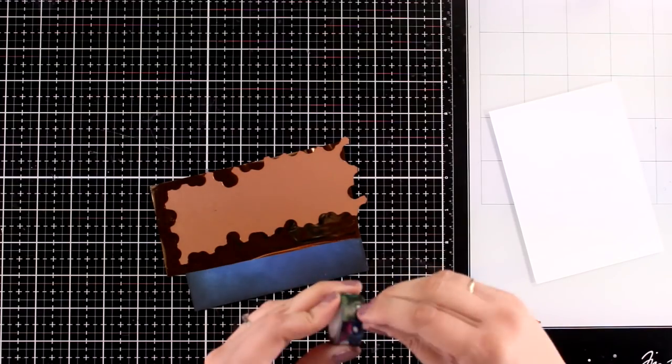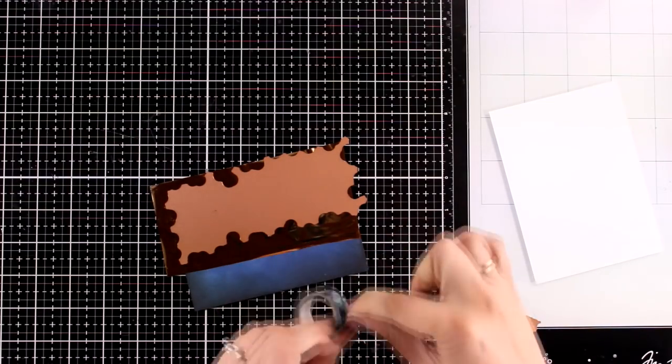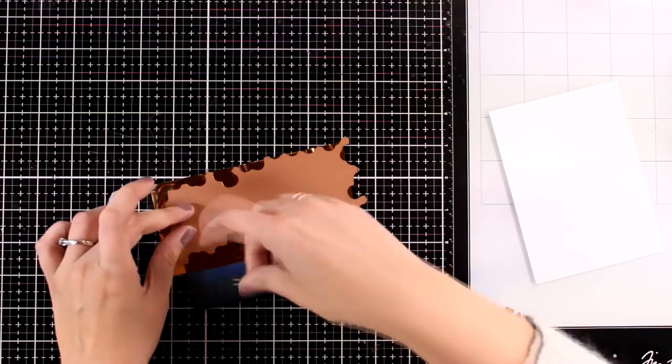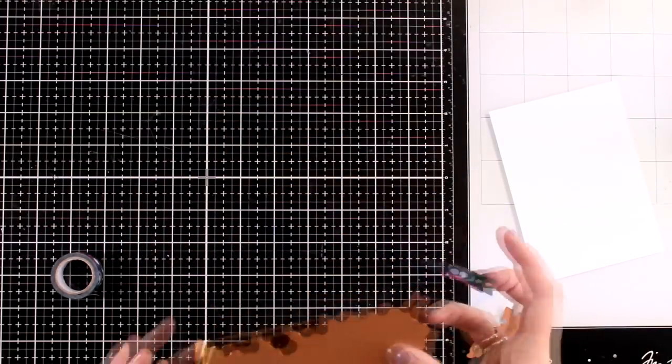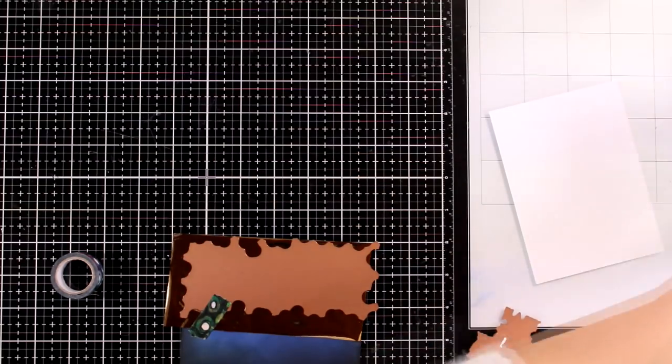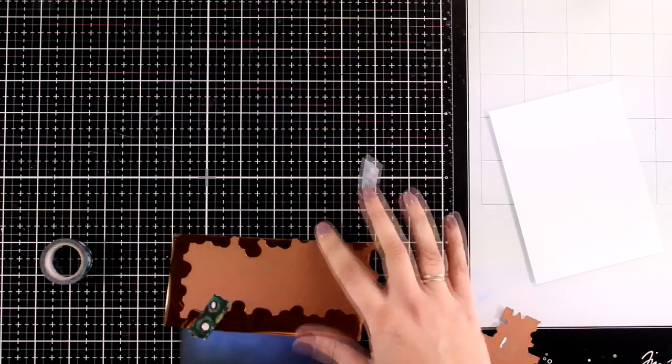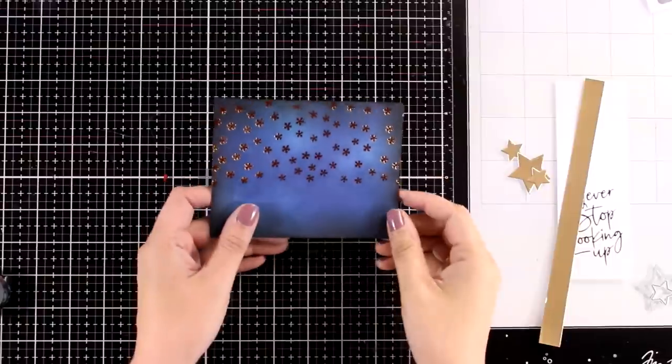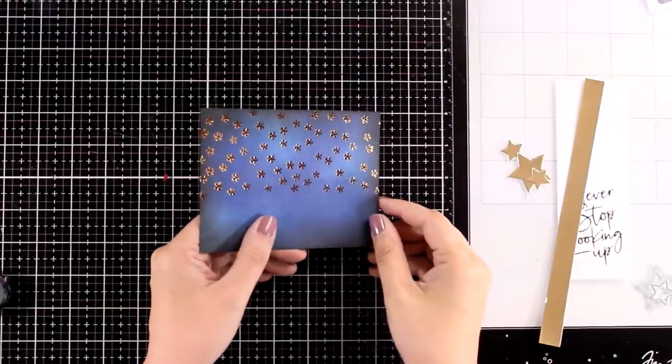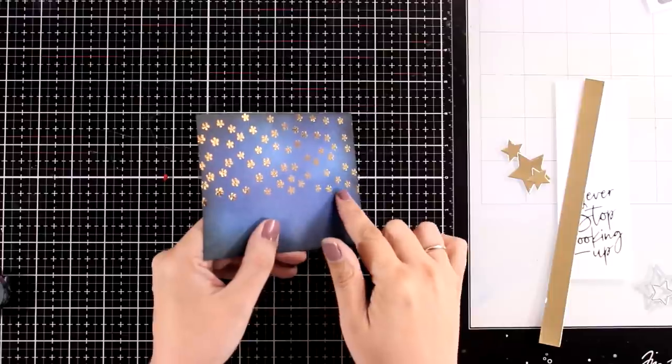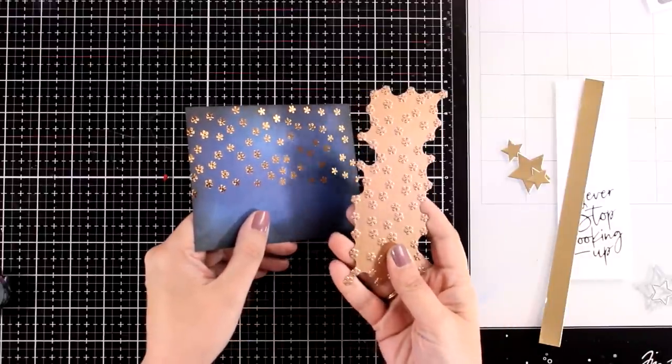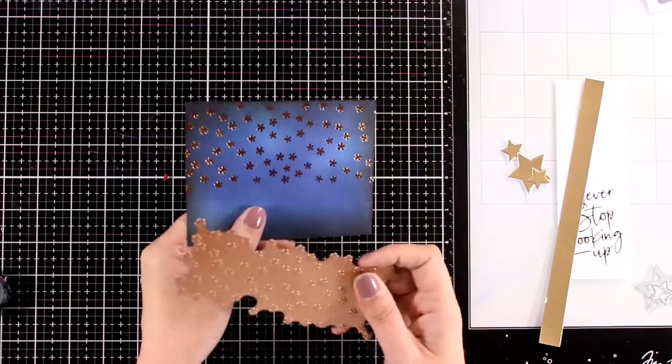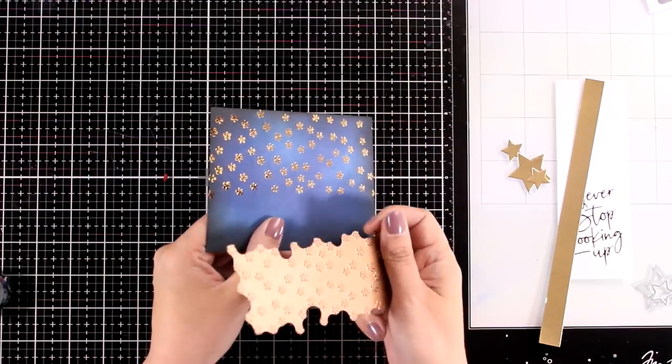I am placing everything down, securing it with my washi tape and I use again a gold foil. And here is the surprise - after foiling and peeling off the foil I realized that I picked the wrong plate. So instead of having stars all over my background I do have little flowers. Things like that happen to me all the time but with the magic of video editing I saved the day.